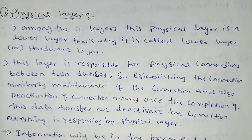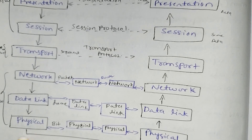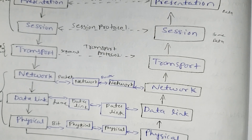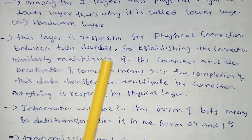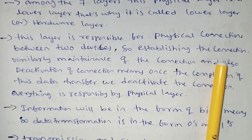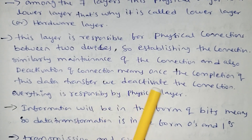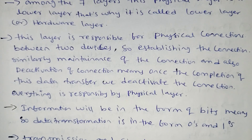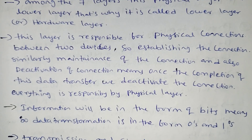This physical layer is responsible for physical connections between two devices — establishing the connection, maintaining the connection, and also deactivating the connection once data transfer is complete. Everything related to the physical connection between Host A and Host B is the responsibility of the physical layer.